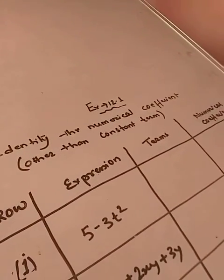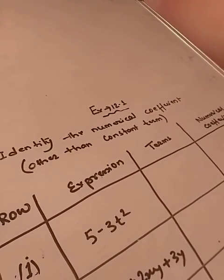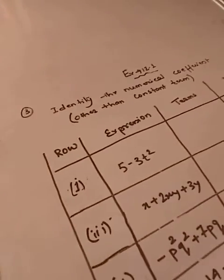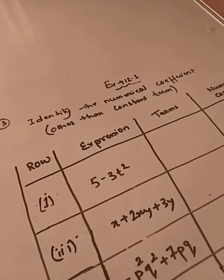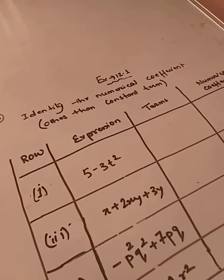Hello students, today we'll again continue with exercise number 12.1 from sum number 3. Sum number 3, 4, 5, these are all very easy sums. Now question number 3, what is it saying? It is saying identify the numerical coefficient other than the constant term. Now we'll understand the meaning of this thing.